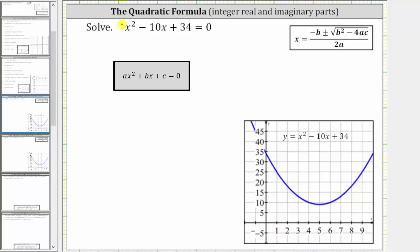So again here, a is equal to one, b is equal to negative 10, and c is equal to positive 34.